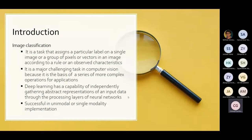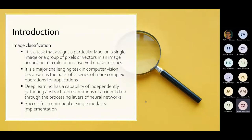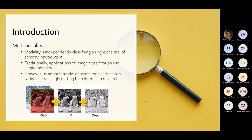Image classification is a task that assigns a particular label on a single image or a group of pixels or vectors in an image according to a rule or an observed characteristic. It is a major challenging task in computer vision because it is a basis of a series of more complex operations for applications. Deep learning has the capability of independently gathering abstract representations of an input data through processing layers of neural networks, and it has been successful in unimodal or single modality implementation.